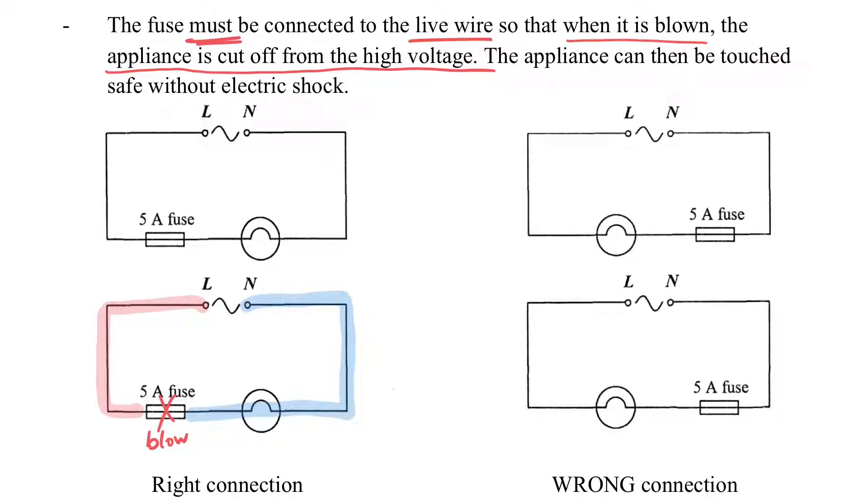So the electrical appliances will keep at the low potential, so that it is more safe. Because there is zero potential at the electrical appliances in this case after the fuse is blown.